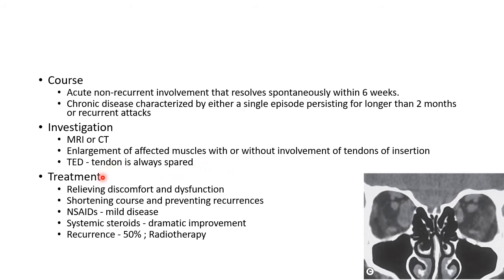Treatment of orbital myositis is aimed at relieving discomfort and dysfunction, shortening the course, and preventing recurrences. NSAIDs can be given for mild disease, while systemic steroids can be started for moderate disease and produce dramatic improvement. The recurrence rate is around 50%, and for recurrent cases radiotherapy is indicated.